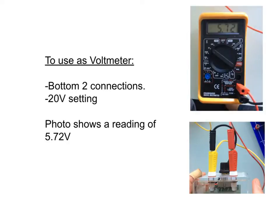Just quickly recap the key points from that. Using your multimeter as a voltmeter, you can see we've got it connected on the bottom two connections over here and you've got it on the 20 volt setting up on the top left. We can see here on the screen it's got 5.72, which means you've got a potential difference of 5.72 volts between each of those two leads.